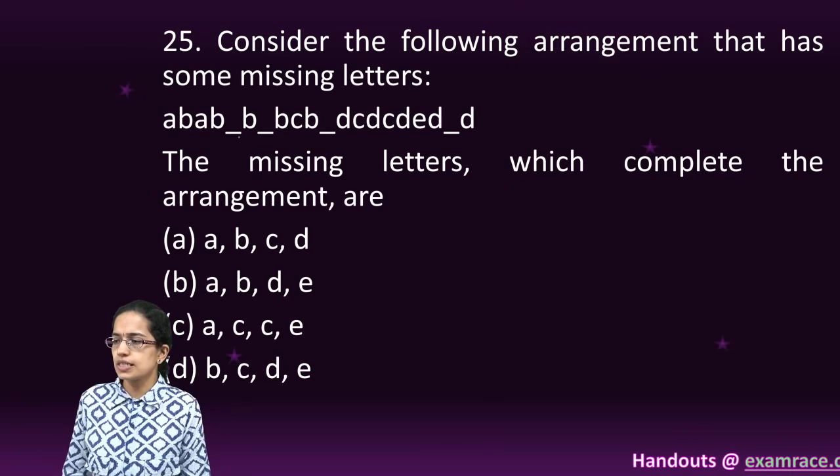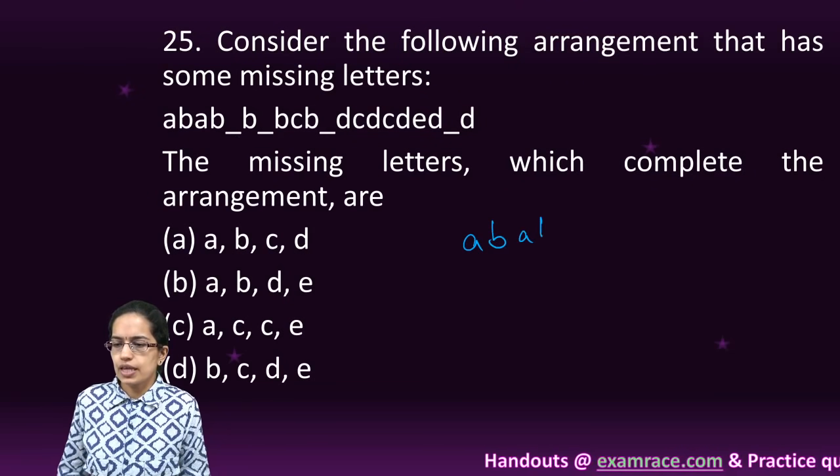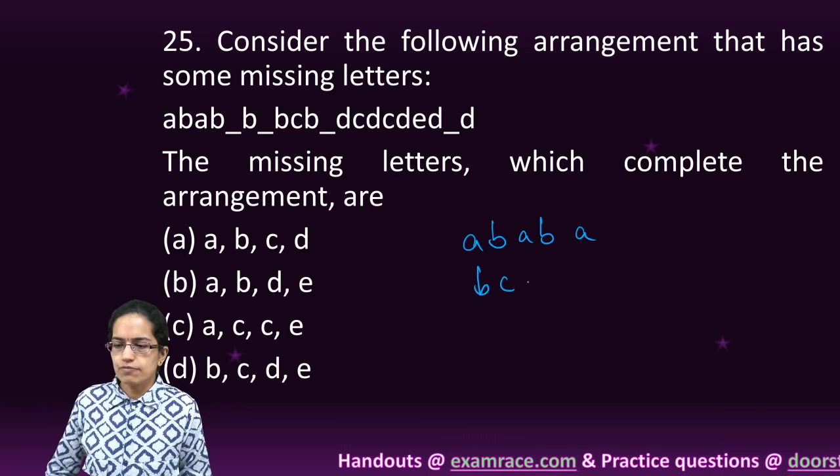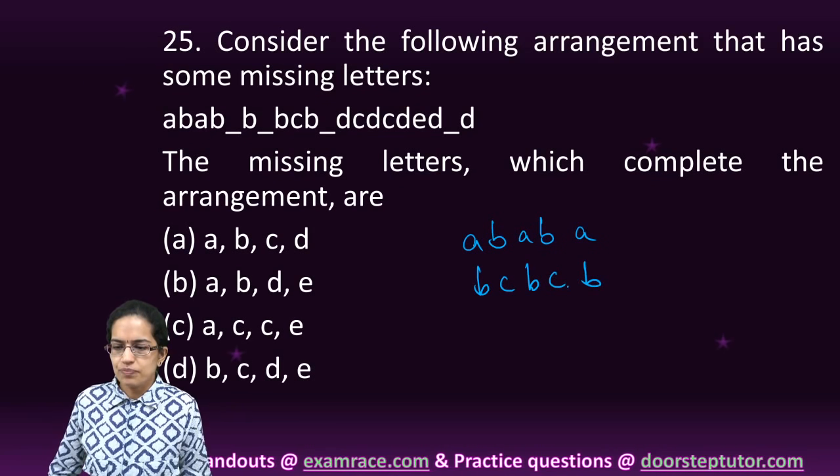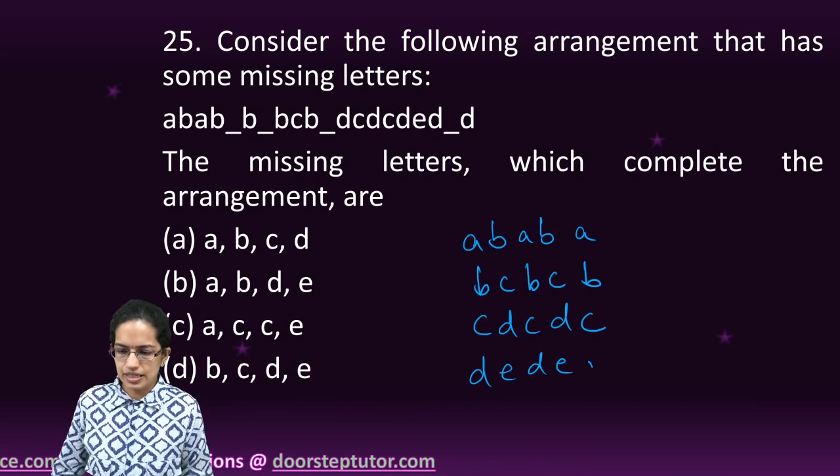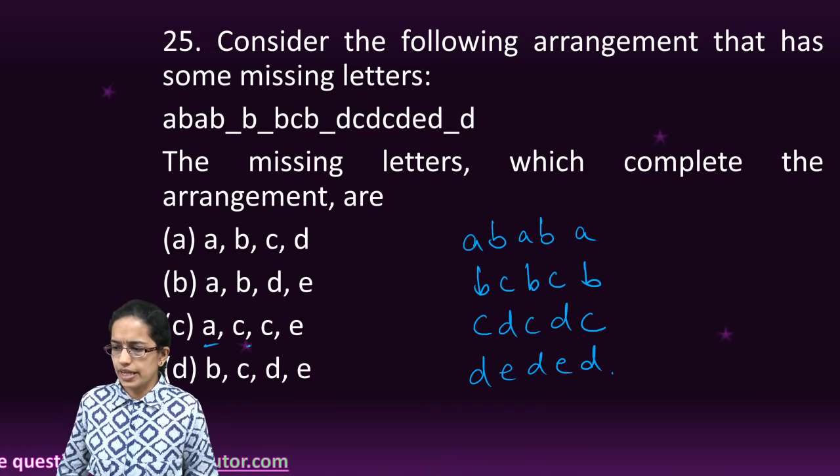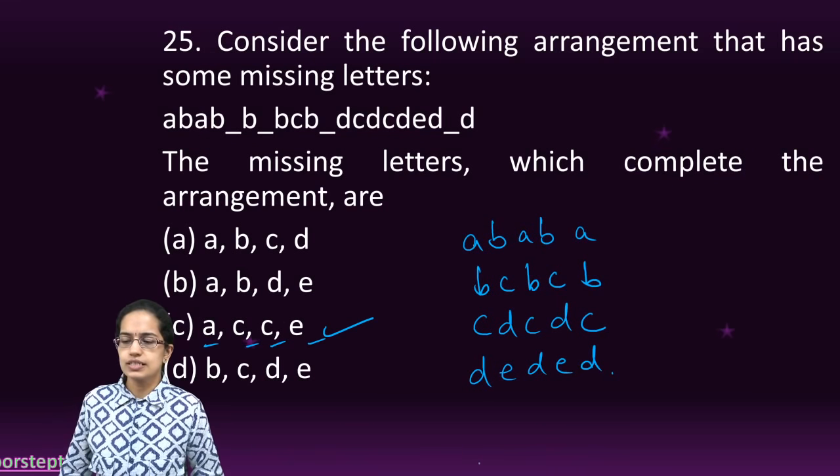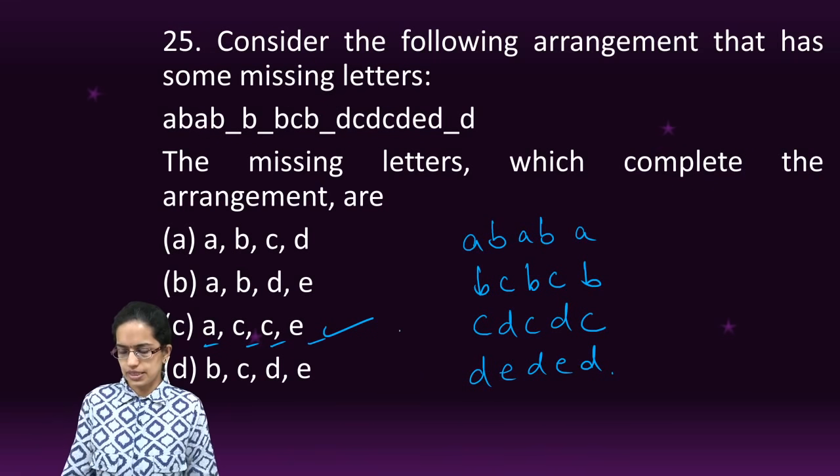Now this is a simple series where you have A, B, A, B, A then you would have B, C, B, C, B then you would have C, D, C, D, C and D, E, D, E, D. So you would have A, C, C, E as the right option or the missing alphabets that would be there.